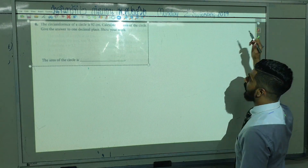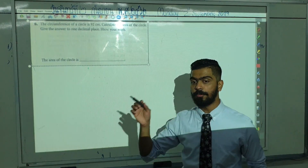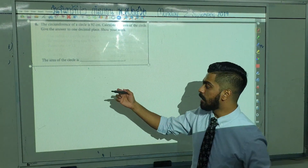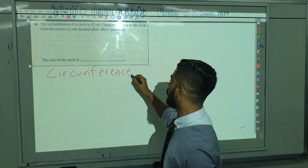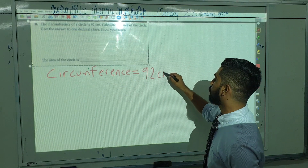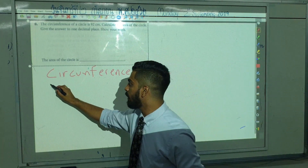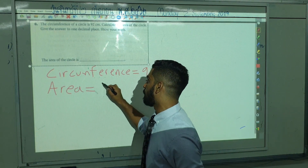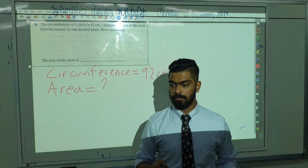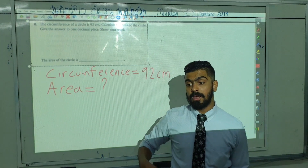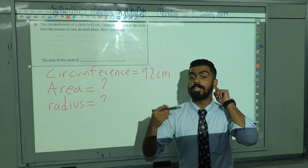In this question, what do we know? We know the circumference — and how much is the circumference? It is 92 cm. So this is what we know, and what are they asking us to find? The area. Now, when we talk about a circle, what do we need to find the area? A radius — very good, we need the radius.